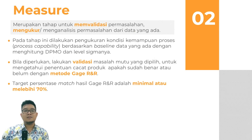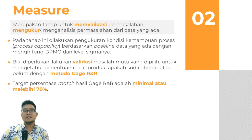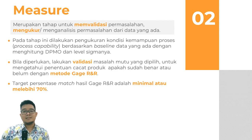Yang kedua adalah Measure, yang berarti mengukur. Pada tahap Measure ini merupakan tahapan untuk memvalidasi permasalahan kemudian mengukur ataupun menganalisis permasalahan dari data yang ada. Pada tahap ini dilakukan pengukuran kondisi kemampuan proses atau process capability berdasarkan baseline data yang ada dengan menghitung DPMO dan level sigma-nya. Jadi pada tahap measure ini kita ketahui dulu kondisi kita itu berada di level sigma berapa. Bila diperlukan maka lakukan validasi masalah mutu yang dipilih untuk mengetahui penentuan cacat produk apakah sudah benar atau belum dengan metode gauge R&R. Target persentasi match dari hasil gauge R&R itu minimal melebihi dari 70%.